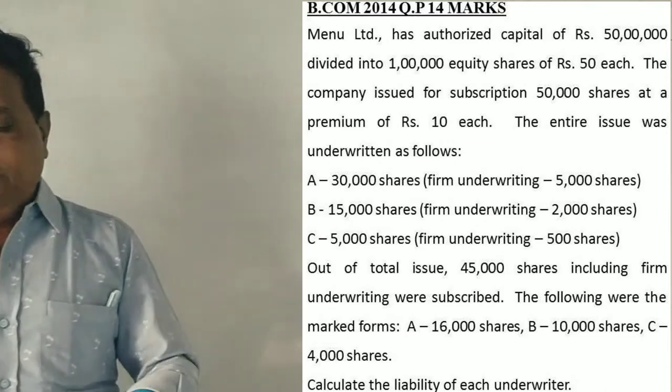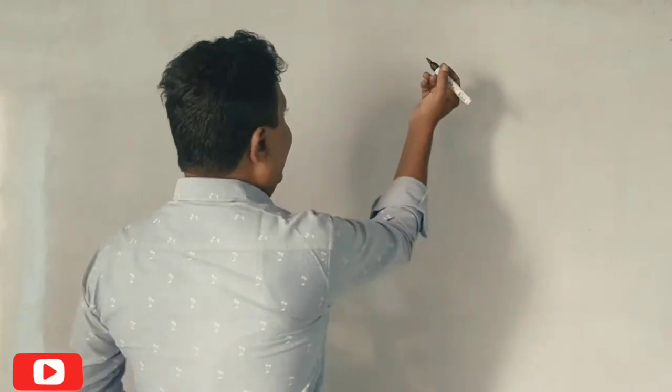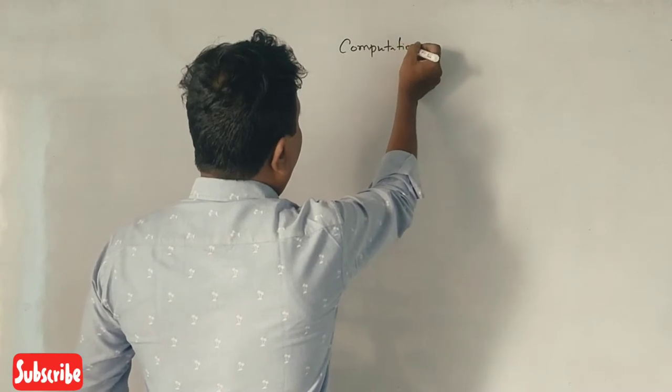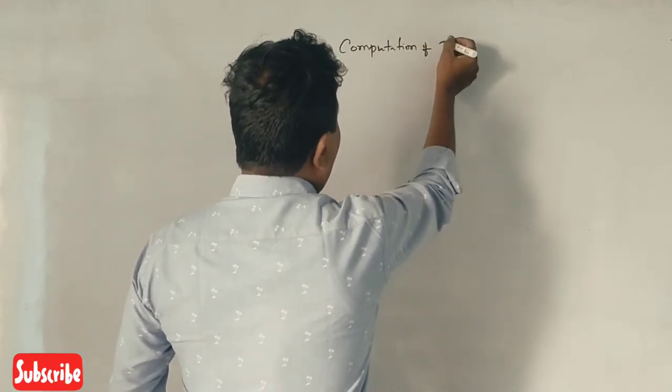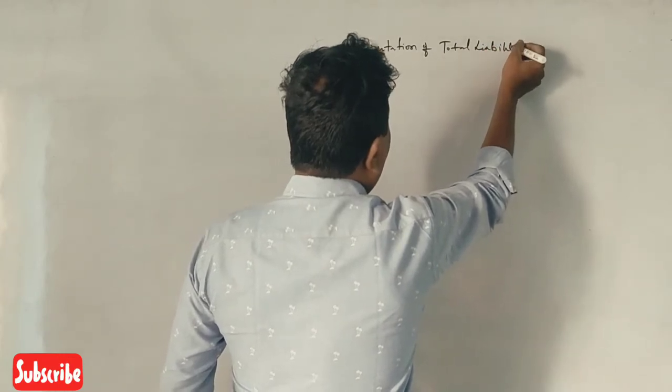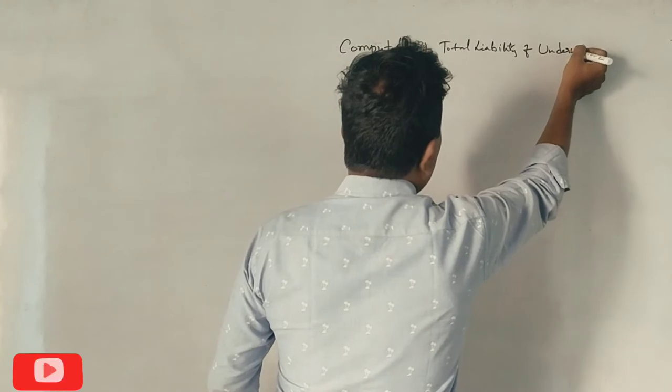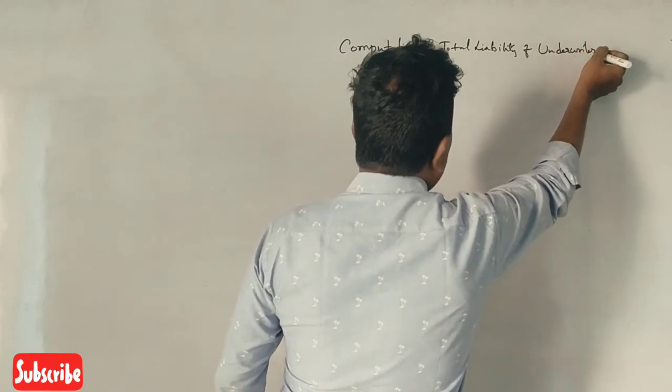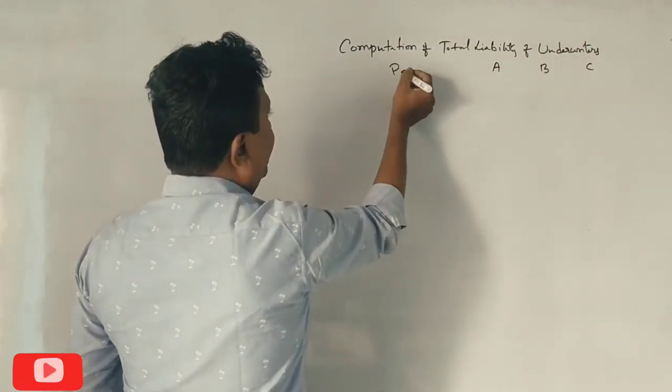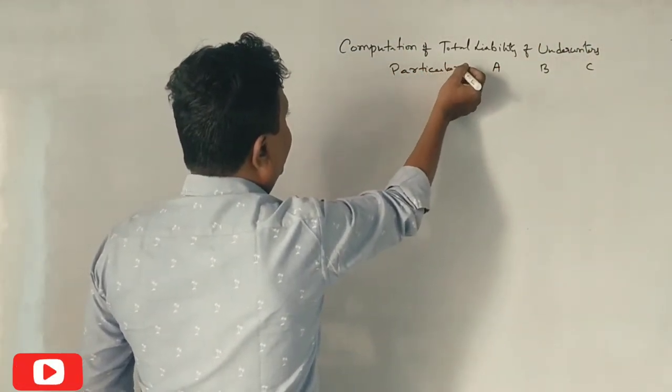Calculate liability of each underwriter. That is how it is. Now, firm underwriting, what does it mean? Marked treatment. This is the computation of total liability of underwriters. A, B, C. This is the computation of particular liability.